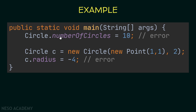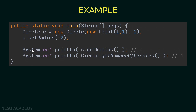Now we have encapsulated number of circles. If we try to access it and assign a value, we get an error because it is now private. Likewise, trying to assign the radius directly gives an error because it is also private. In the corrected example, I create a circle object with a point and radius equal to 2, then call c.setRadius(-2). Since -2 is negative, the radius is assigned to 0.